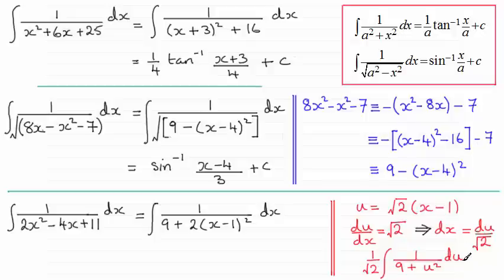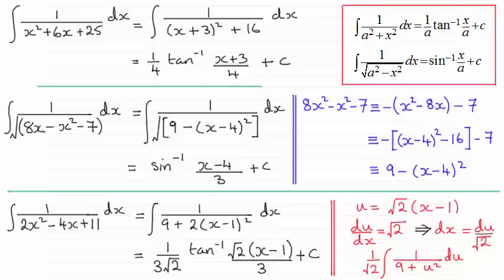So if you integrate this then you're going to get 1/3 inverse tan of u/3 plus c, and coupled with the 1/√2 at the front here, and substituting back for u, then you should find you get this answer. So I hope that's giving you some idea then on how we can use completing the square to change these types of integrals into these particular forms.